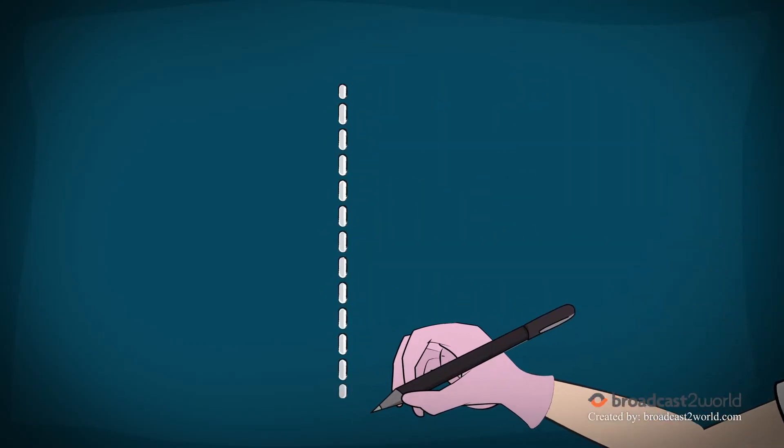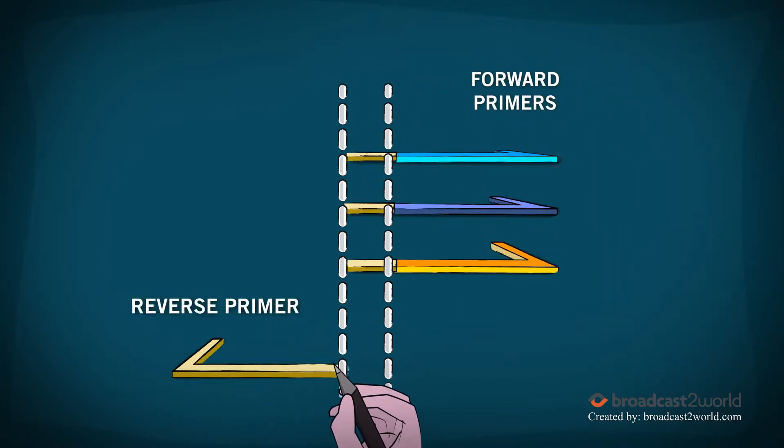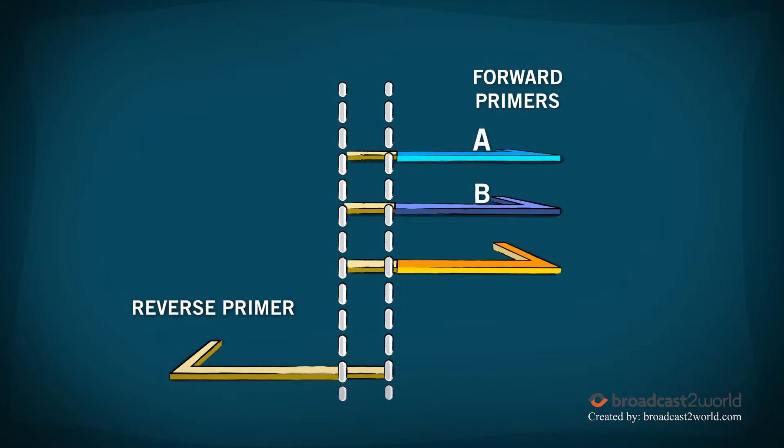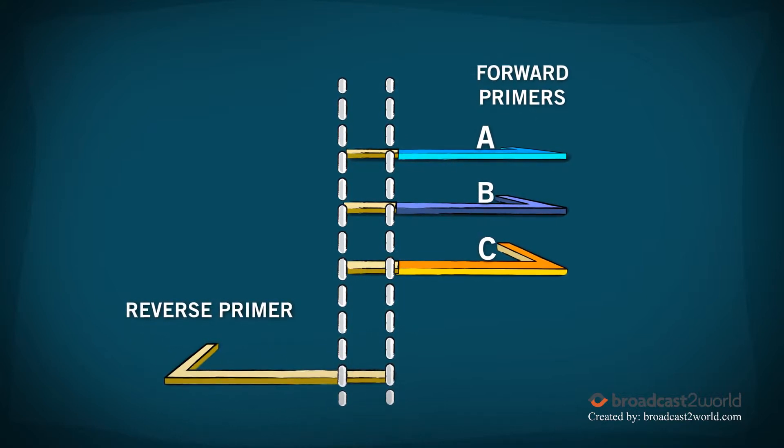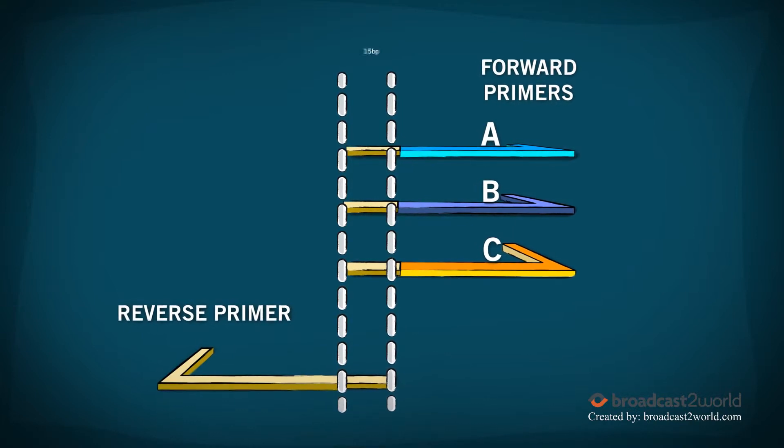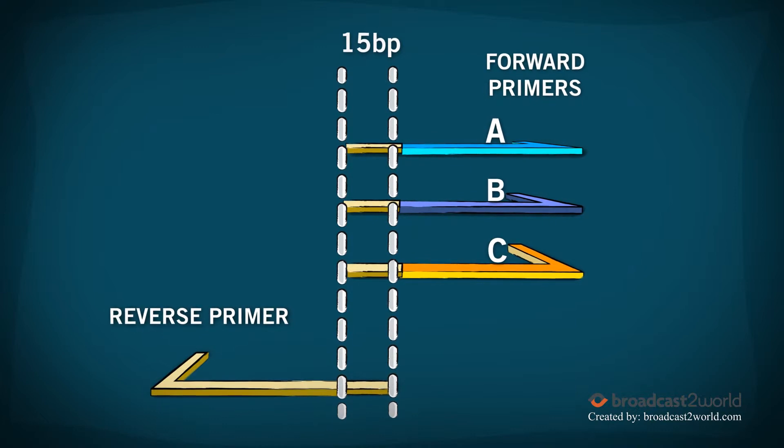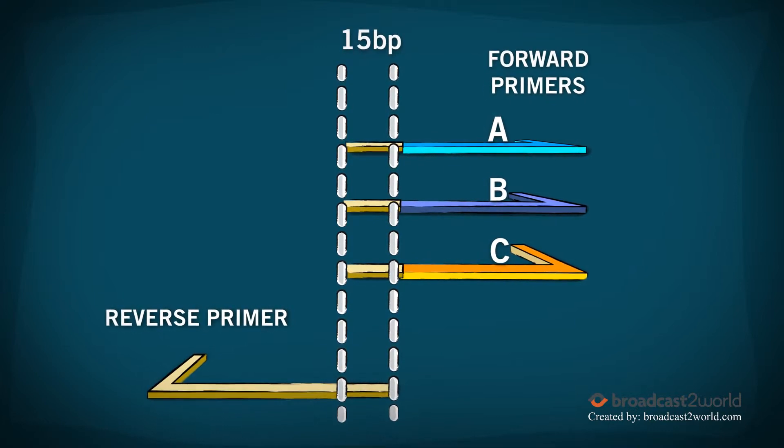To make her three deletions, Yumi needs to design three forward primers and one reverse primer. Each forward primer should span a region of deletion without actually containing the sequence to be deleted. The reverse primer will have a 15 base pair overlap with each of the forward primers and will be against the backbone.